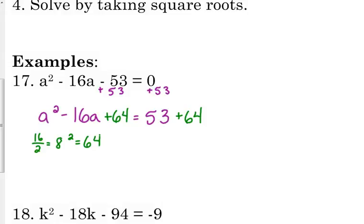So I'm going to factor the left side. We've got a minus 8 squared is the left side, and then I'm going to add those constants on the right side, so that's 117. And here's where I'm going to solve by taking square roots. A minus 8 is squared, so I'm going to take the square root of both sides because that's the opposite of squaring something. So the square root and square cancel. We just have A minus 8 left right there.